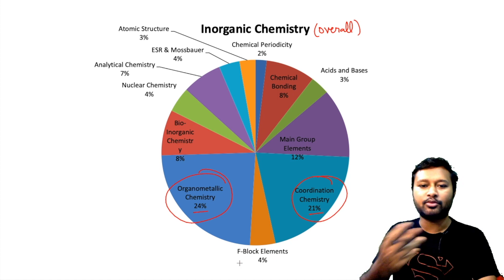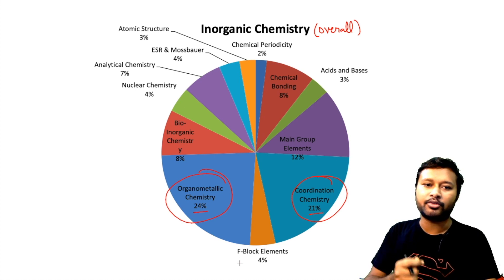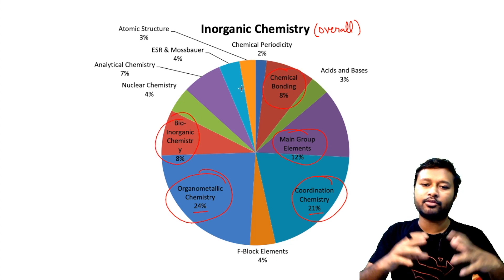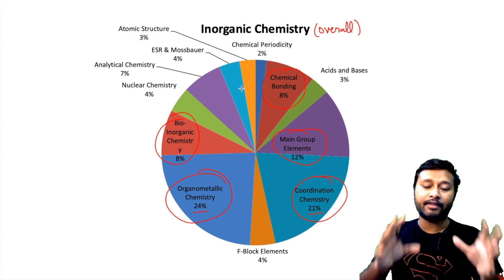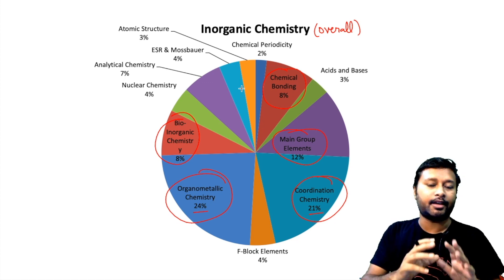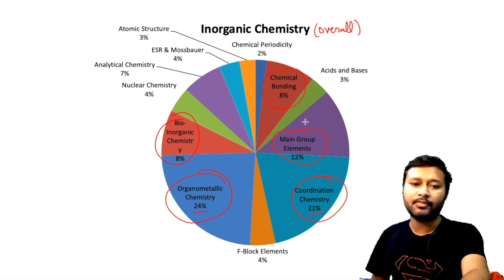Now I have summarized this information into a pie chart showing the percentage of the question paper covered by each inorganic topic overall — combining Part B and Part C. Organometallic chemistry has a 24% share and coordination chemistry has roughly 21% share. Just preparing these two topics gives you around 45% of the inorganic syllabus, and adding bioinorganic chemistry or f-block elements brings it to about 50%. Main group elements, bioinorganic chemistry, and chemical bonding are also important topics you should not miss.